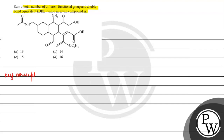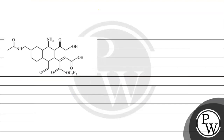The key concept for this question is double bond equivalent. Double bond equivalent basically tells us about the number of multiple bonds and the cyclic rings present in the system. The formula is: number of carbons plus 1, minus number of hydrogens divided by 2, minus number of halogens divided by 2, plus nitrogen atoms divided by 2.